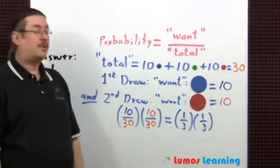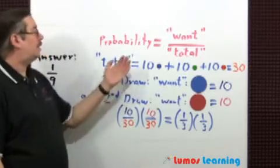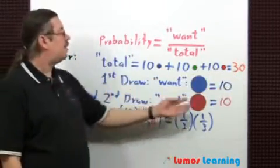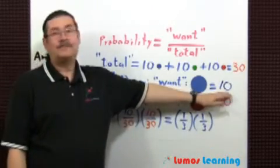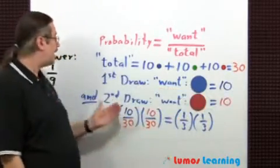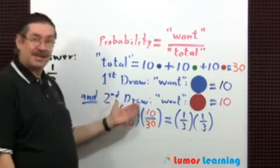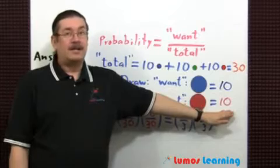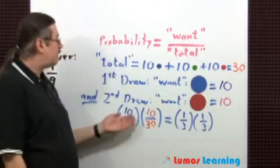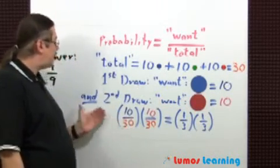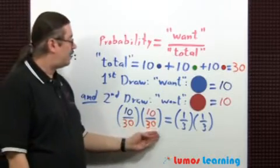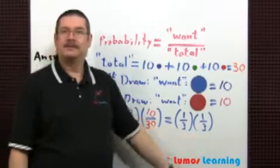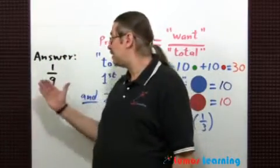To answer this question, it's very similar to what we did previously. The total is going to be the same, 30. For the first draw he wants to get a blue marble. There are a total of ten ways of doing that. And for the second draw he wants a red marble. There are ten ways of getting a red marble. So the probability is just going to be 10 divided by 30, and means multiply, 10 divided by 30. Reduce your fractions, you get one third times one third. The answer once again is one ninth.